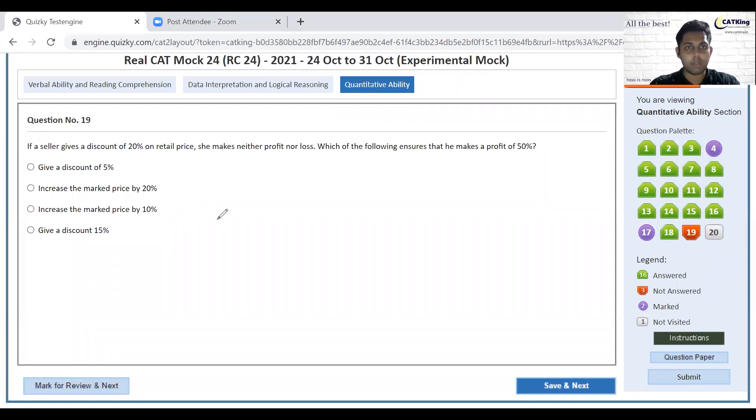Give the discount to 20, so assume retail price is 100, discount is 20%, 80 is the selling price, neither profit, neither loss. CP equals 80. So mark price equals 100, profit 50%, so I need my selling price to be 120. Discount of 5, no. Increase mark price by 20%, done. It will turn into 20%, and the answer will be 20%.